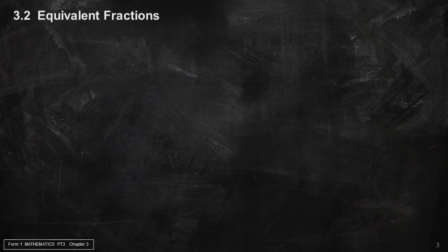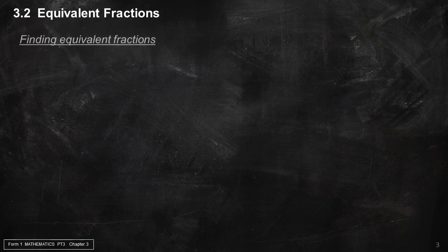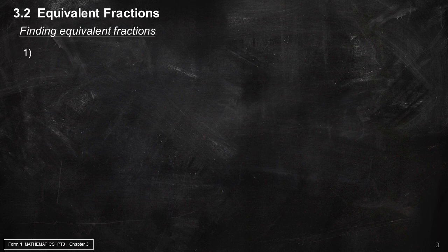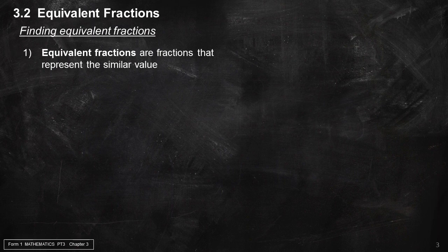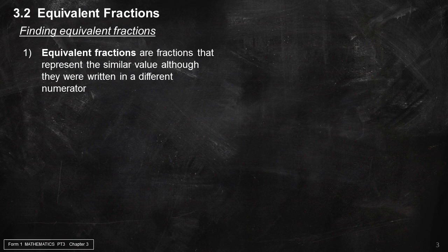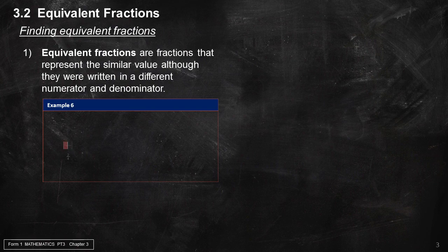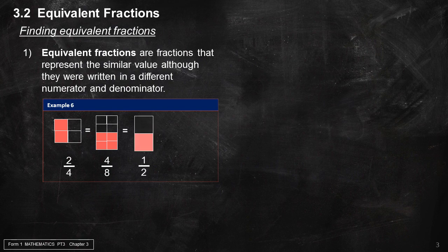Section 3.2: Equivalent Fractions. Equivalent fractions are fractions that represent the same value, although they are written with different numerators and denominators. Example 6: 2 over 4 is equivalent to 4 over 8, which is equivalent to 1 over 2, or half.